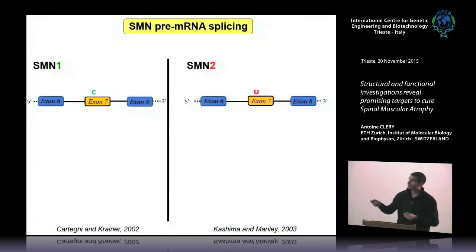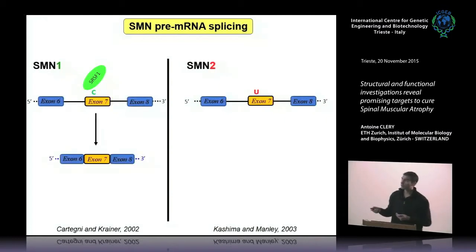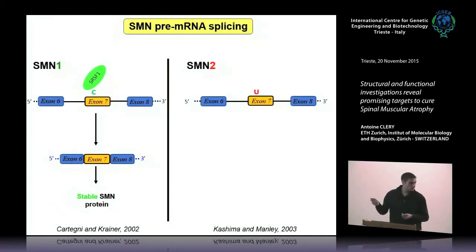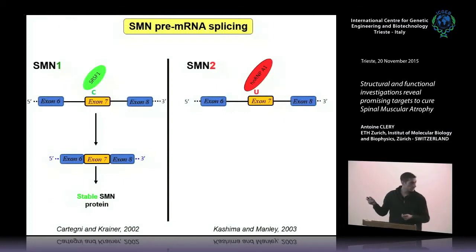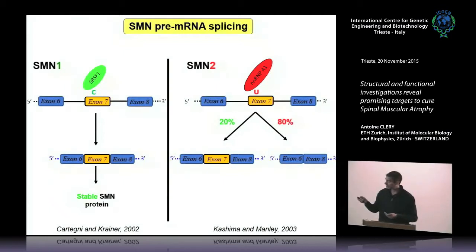In the case of SMN1 exon 7, the cytosine allows recruitment of SRSF1, an SR splicing factor, which promotes inclusion of exon 7. Translation of this mRNA leads to production of stable and functional SMN protein. In the context of SMN2, the uridine instead prevents SRSF1 binding and instead promotes recruitment of HNRNPA1, another splicing factor with the opposite effect. This primarily promotes skipping of exon 7, leading to production of unstable SMN protein.